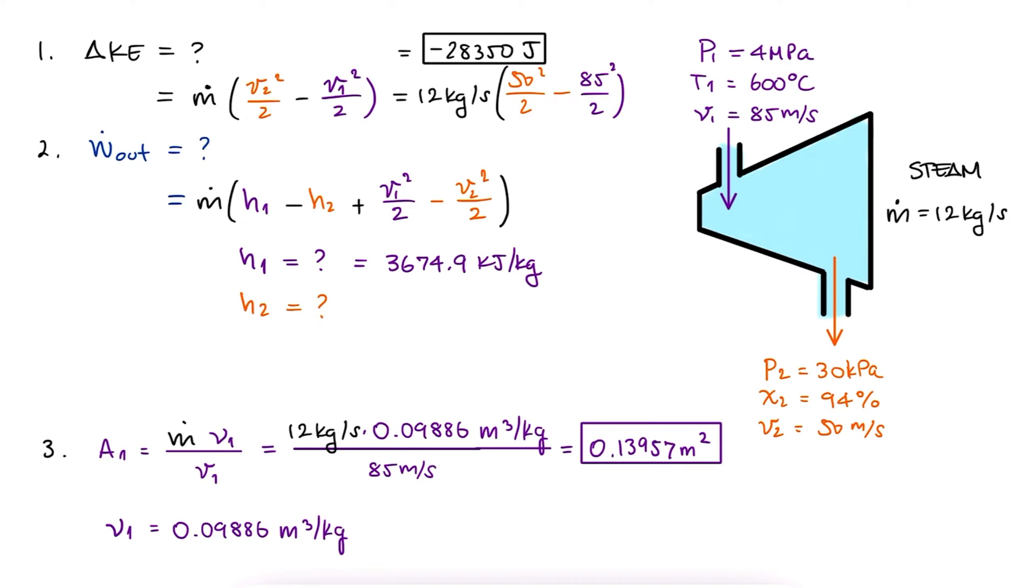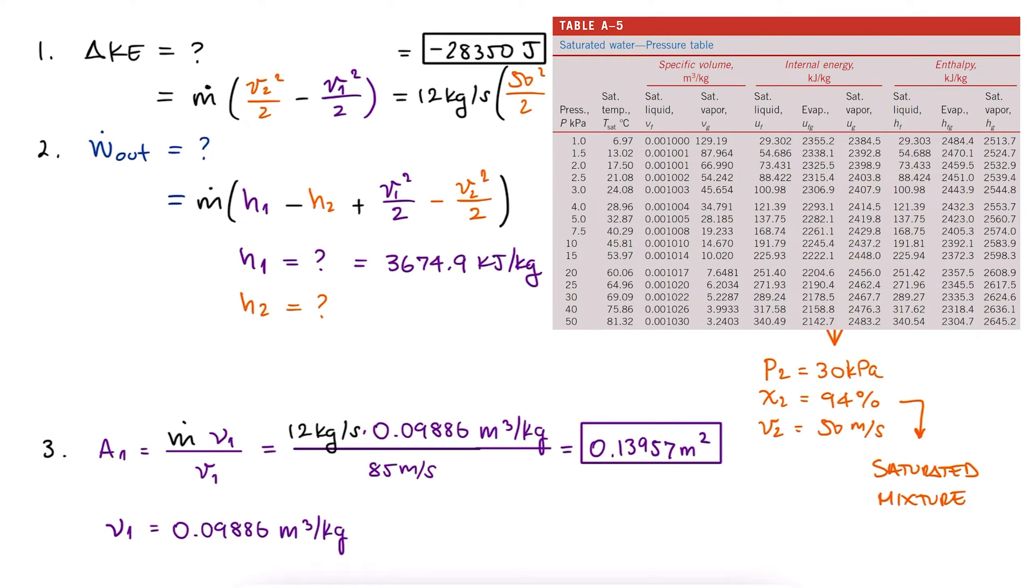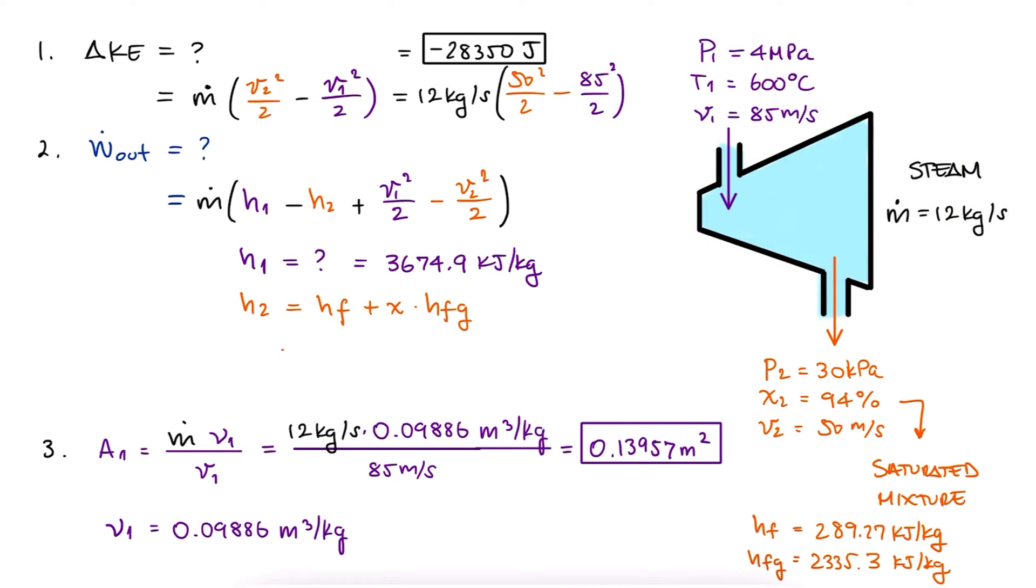At this point, all we're missing is H2. At state 2, where we have a quality value and therefore our substance is a mixture, we go to our saturated tables by pressure and look up 30 kilopascals to write down Hf and Hfg. We use these two values and the quality information to find H2.